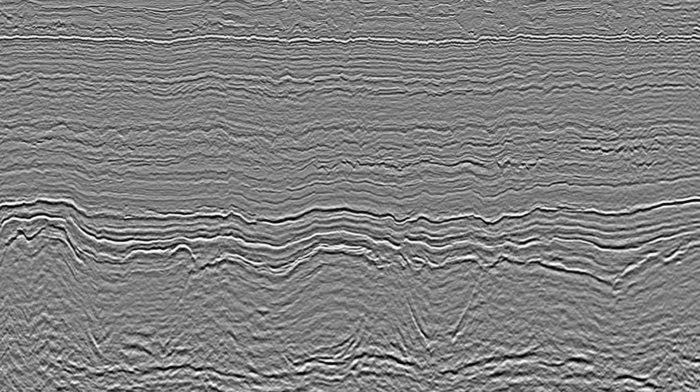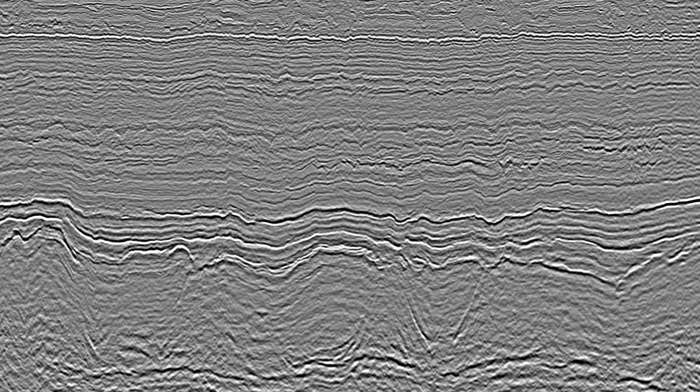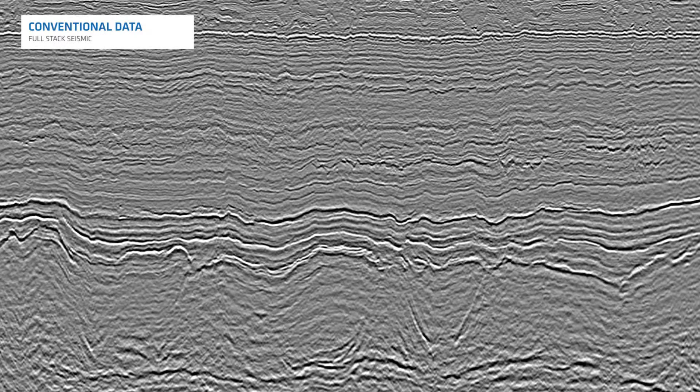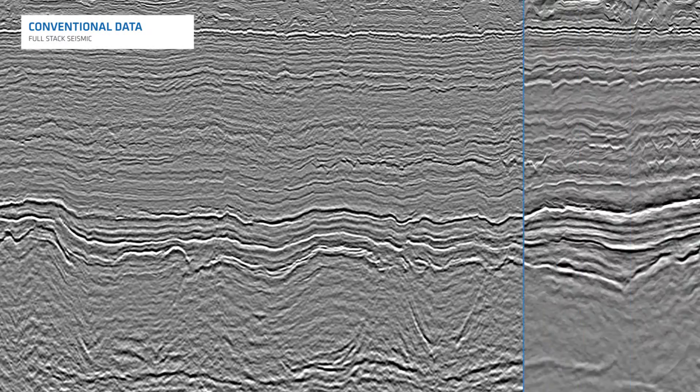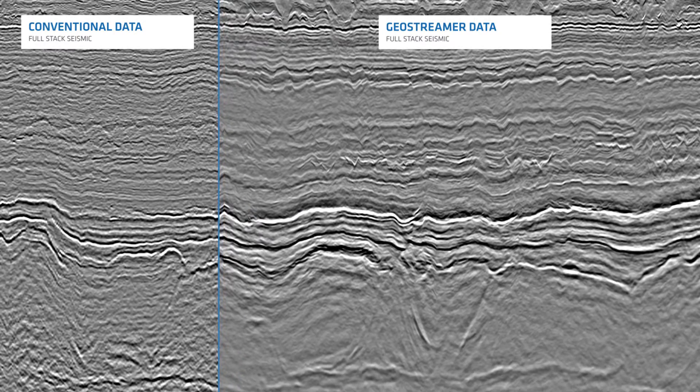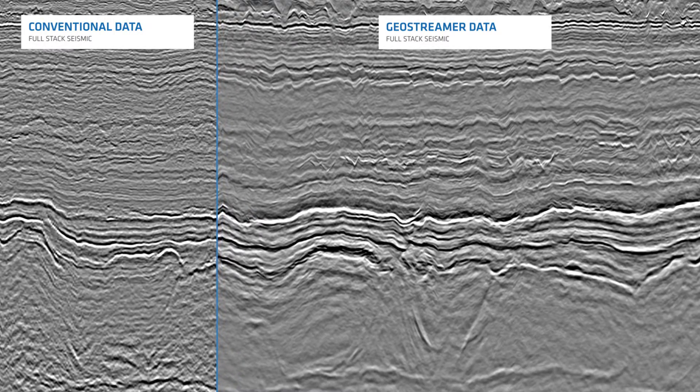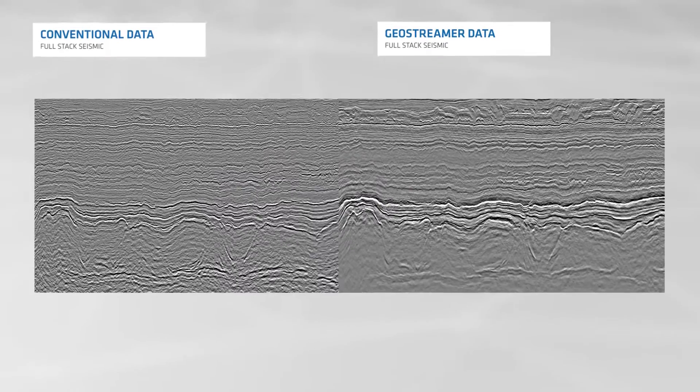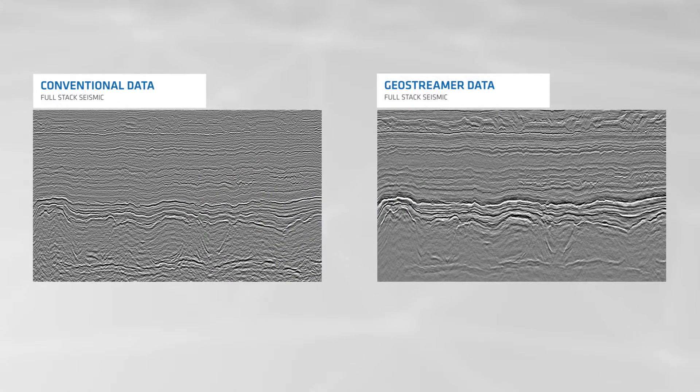This North Sea data example illustrates the significant benefits of using geostreamer data for estimating rock properties of a deep mid-Jurassic reservoir. A comparison with conventional data illustrates the finer detail revealed by geostreamer data in the near surface and the increased structural detail in the deeper reservoir section.